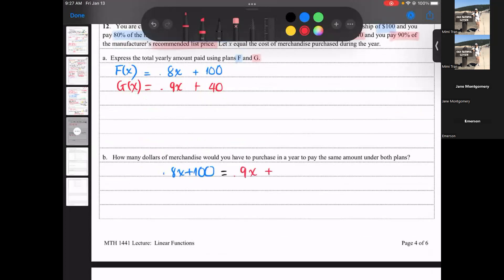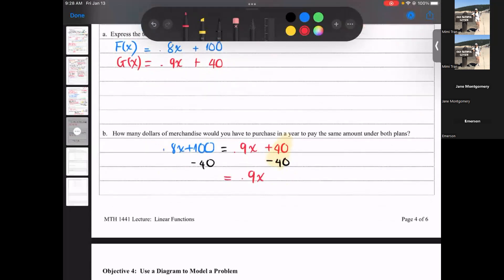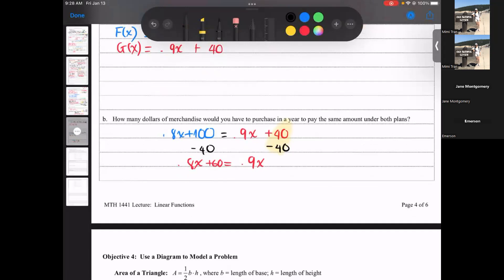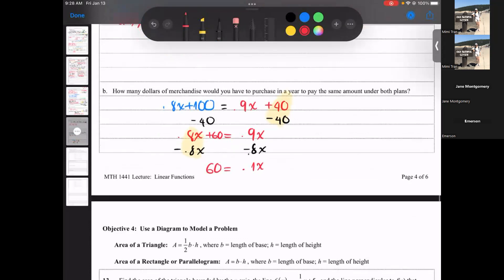Set them equal to each other. 0.8x plus 100 equals 0.9x plus 40. Subtract 40 both sides. I'll do it slowly, later on I might not, but now I'll just do it slowly. 0.8x plus 60. Subtract 0.8x, cancel. So I have 0.1x equals, you keep it in red, it should be consistent, 0.1x equals what? 60. Divide both sides by 0.1, x equals what? Thank you.